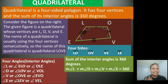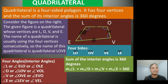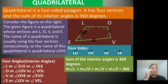The sum of interior angles is 360 degrees. Since it is a sum, the operation is addition. M stands for measure, so: measure of angle L plus measure of angle O plus measure of angle V plus measure of angle E equals 360 degrees. Do not forget this formula because we will use it in solving problems involving quadrilaterals.